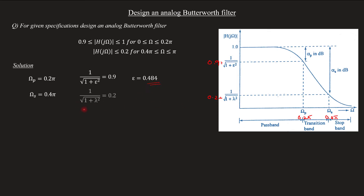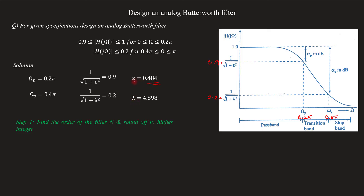From the stopband condition, using 1 divided by the square root of (1 + λ²) equals 0.2, we can find the value of λ. The first step is to find the order of the filter n and round off to the higher integer. So we calculate the values of λ and epsilon.